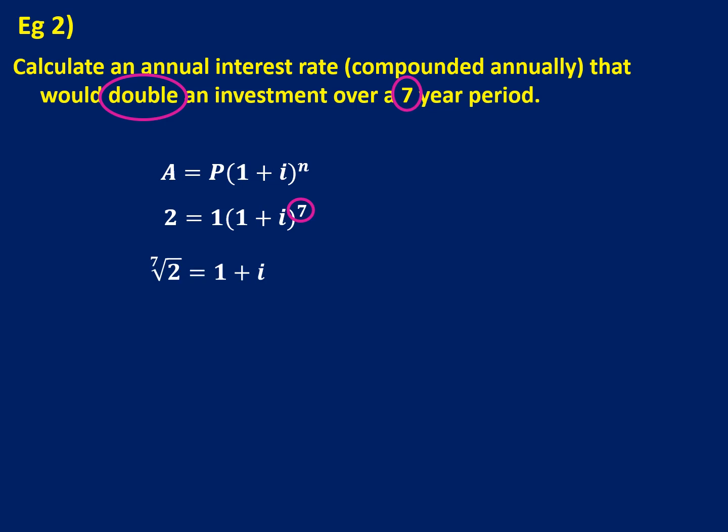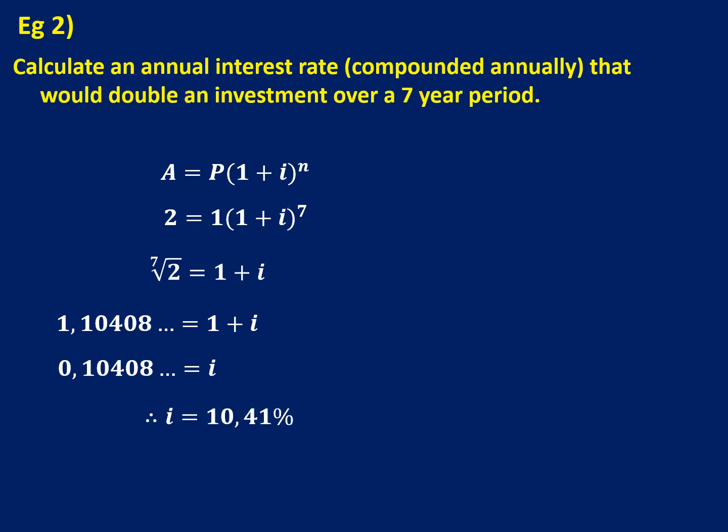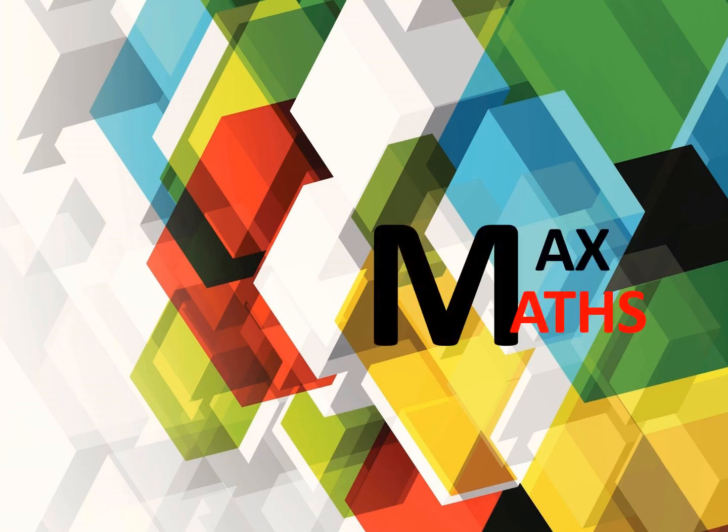You should get 1.10408 with more decimals — don't round off yet, as you don't want to round off too early. The next thing is to subtract 1 to get I on its own, giving 0.10408. Because we want the interest rate expressed as a percentage, we multiply by 100, and now we can round off to two decimal places to get 10.41%. So just be careful not to round off too early — only round off when you finally write your answer as a percentage. Thanks for watching MaxMaths. If you liked what you saw, please like, share, and subscribe.